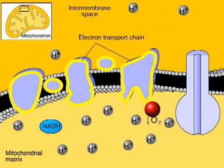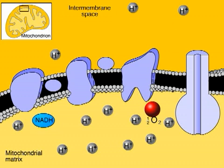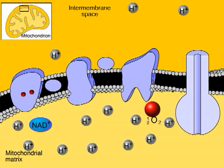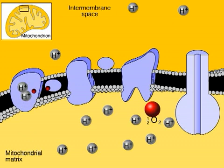The electron transport chain is an array of molecules, mostly proteins, built into the inner membrane of the mitochondrion. NADH gives up its high-energy electrons to the first complex in the electron transport chain. The electrons move from one member of the chain to the next, giving up their energy as they are pulled from NADH toward highly electronegative oxygen.